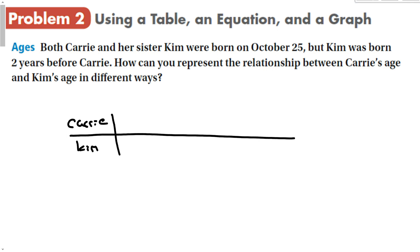Your table can go left to right, like I'm going to do, or we can go up and down and make two columns. We'll do some rows here. Carrie's age, let's say she's one, two, three, four, five, six, seven, eight. And we can keep going, of course. But when Carrie is one, Kim was born two years before her. So when Carrie's having her first birthday, Kim is turning three. When Carrie's two, Kim is four. Five, six, seven, eight, nine, and ten.